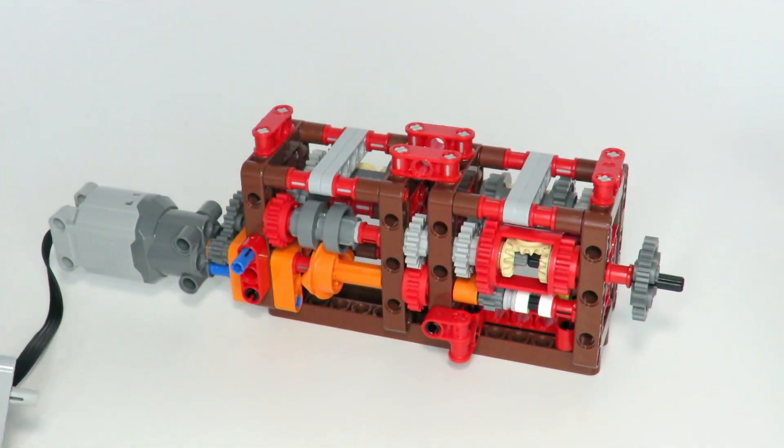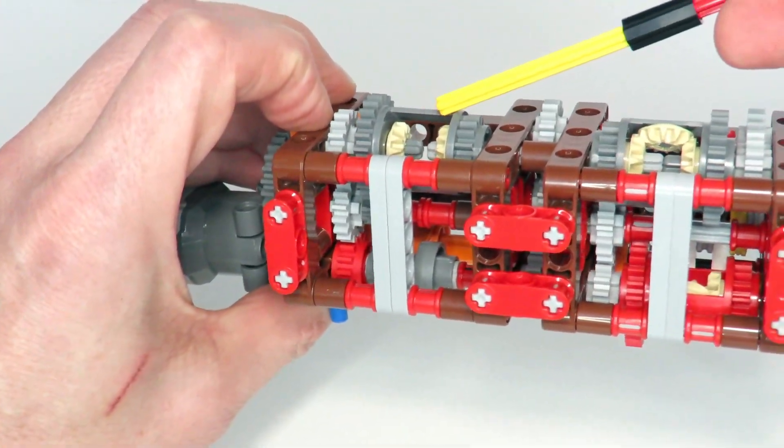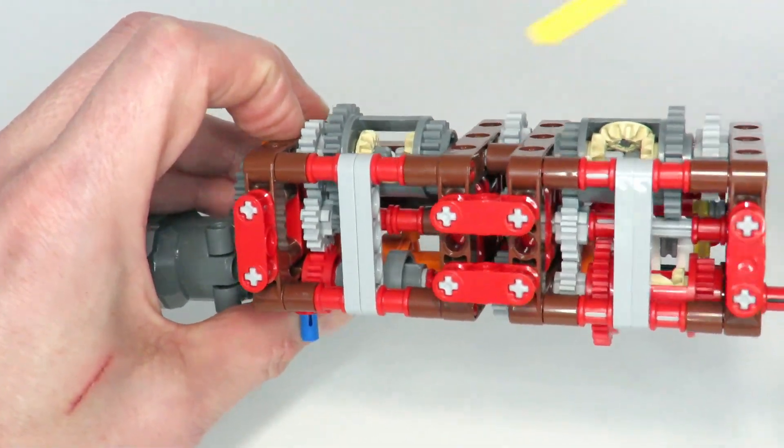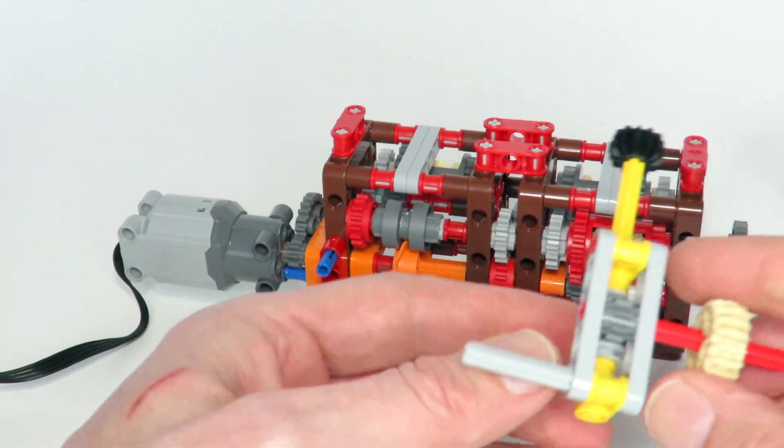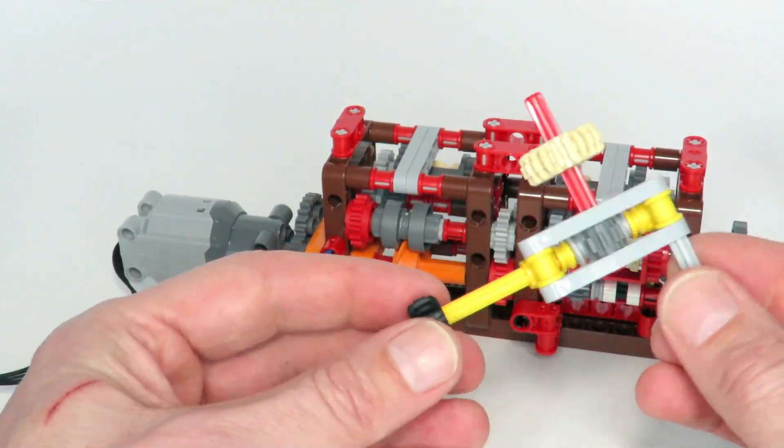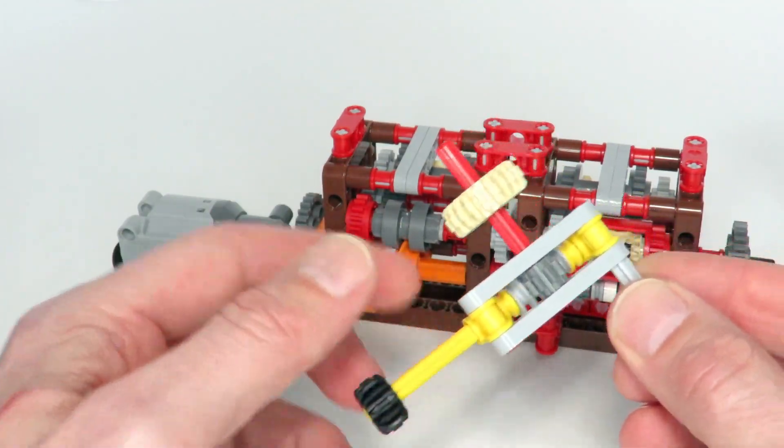And then after that we need to reduce the size of the other components, the magic differential and the adding differential. Now the magic differential can also be replaced, like I've shown in another video, simply by a worm gear mechanism like this.